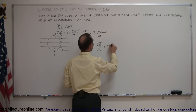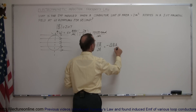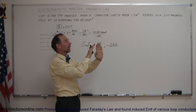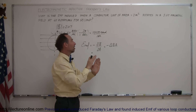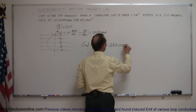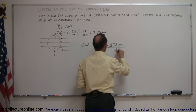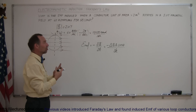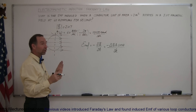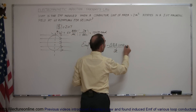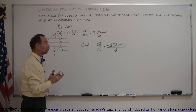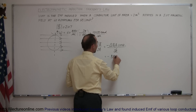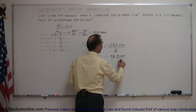We can write this as minus the change in B times the effective area, which is the area perpendicular to the magnetic field. The rotation causes the effective area to change, so we take into account the cosine or sine of the angle, all divided by the change in time. In this case the B field is not changing and the actual size of the loop is not changing — it's the angle that is changing. The effective area is A times cosine of theta, so we write this as minus B times A times the change in cosine of theta over delta t.